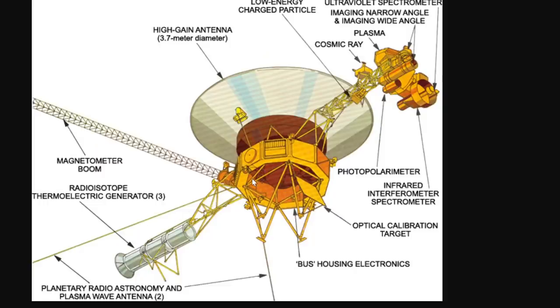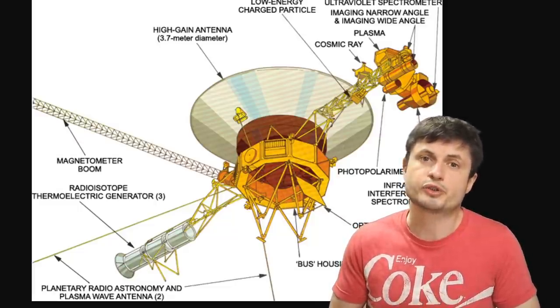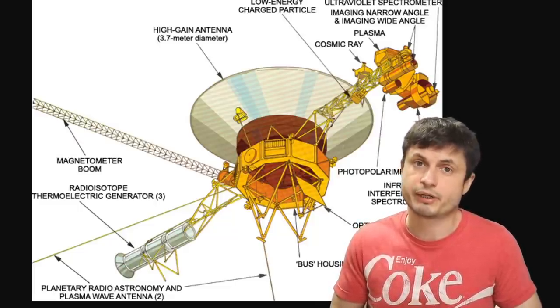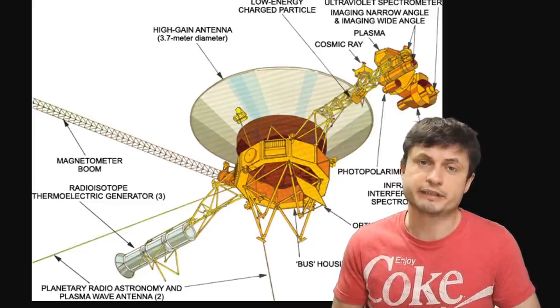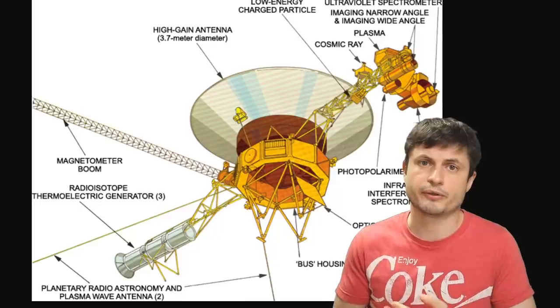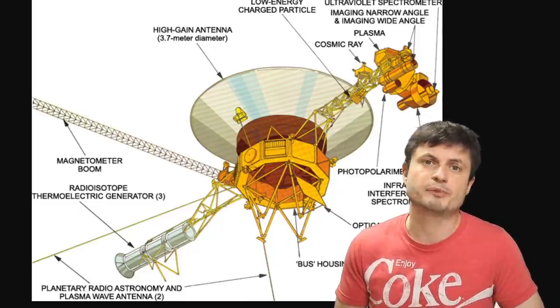But the actual detection is done with these two long antennae you see sticking out on both sides. These are plasma wave antennae, and they both are able to detect the minute vibrations of electrons near the spacecraft. And by detecting those vibrations, it can then transmit the detail and transmit all the data back to Earth. This is known as the Voyager's plasma wave system.